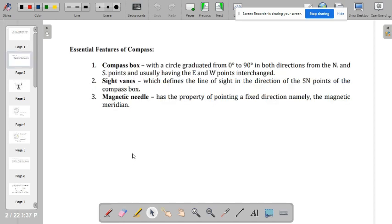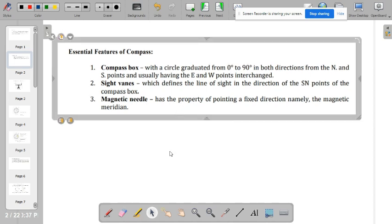So what are the important or essential features of a compass? We have the compass box, the side veins, the magnetic needle.